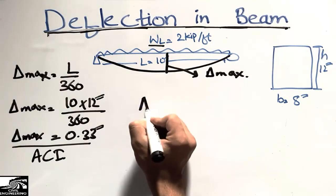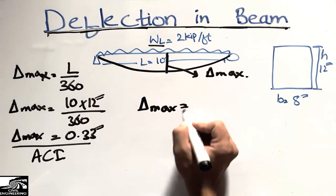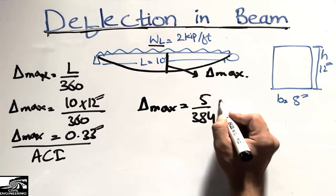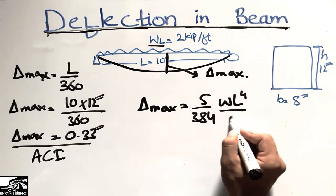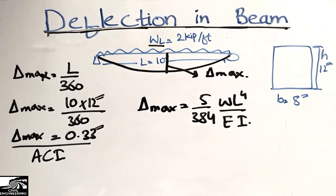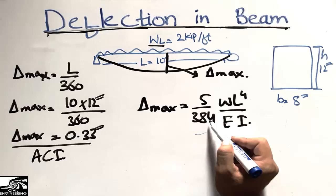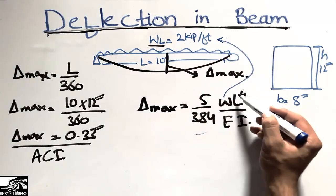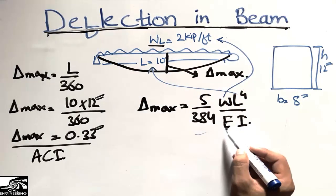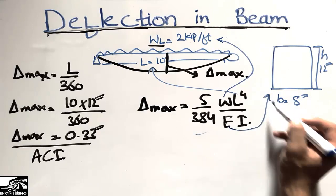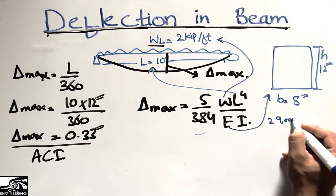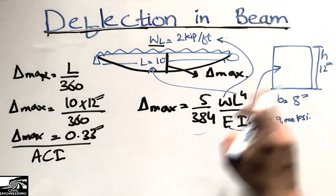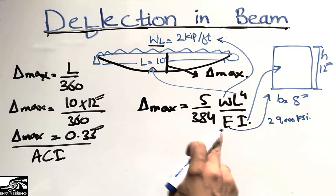To find the maximum deflection, we use the formula for a simply supported beam with a uniform load: delta_max = (5/384) × (W × L⁴) / (E × I), where 5/384 is a constant, W is the load per foot, L is the length of the beam, E is the modulus of elasticity of steel (29,000 ksi), and I is the moment of inertia of the section.